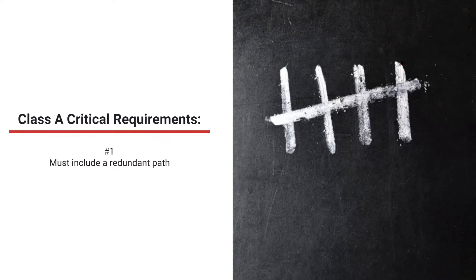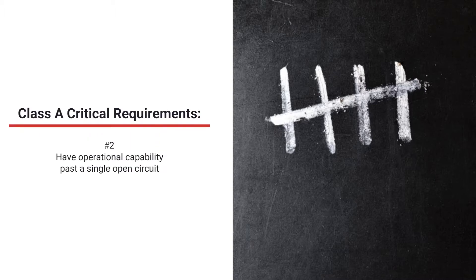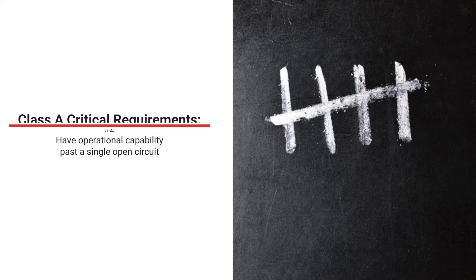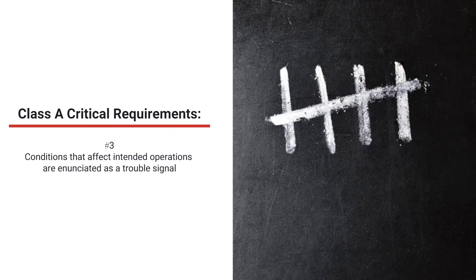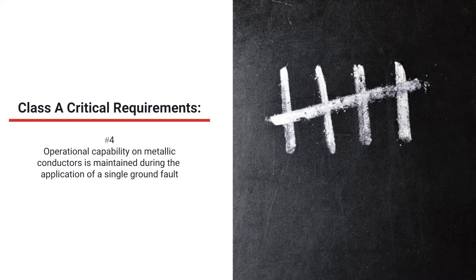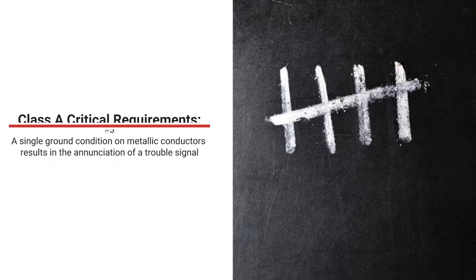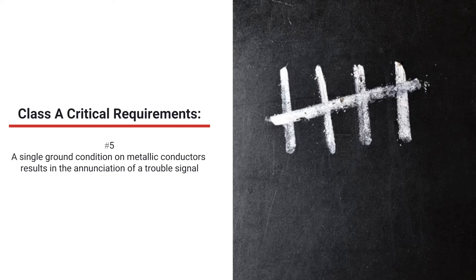The five Class A requirements are: 1) Must include a redundant path. 2) Have operational capability past a single open circuit. 3) Conditions that affect intended operations are enunciated as a trouble signal. 4) Operational capability on metallic conductors is maintained during the application of a single ground fault. 5) A single ground fault condition on metallic conductors results in the enunciation of a trouble signal.